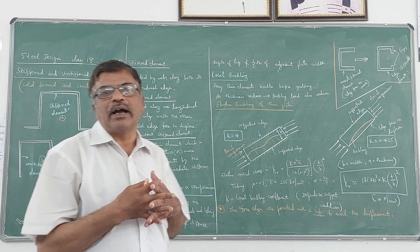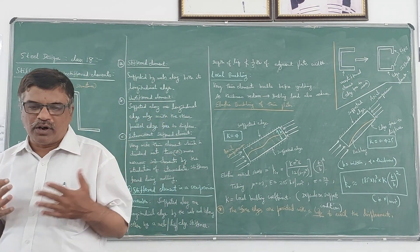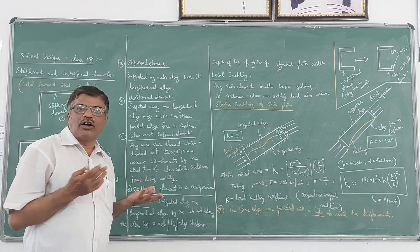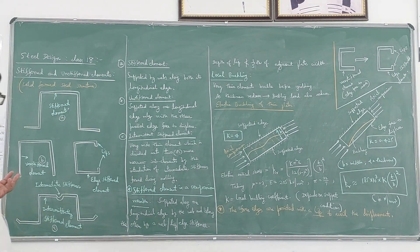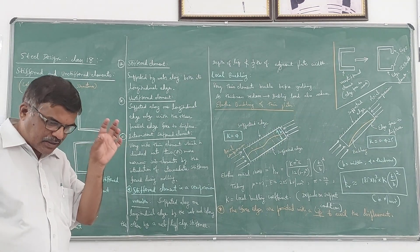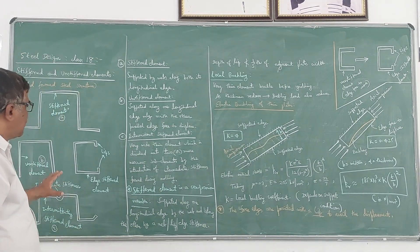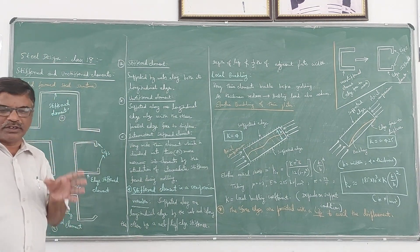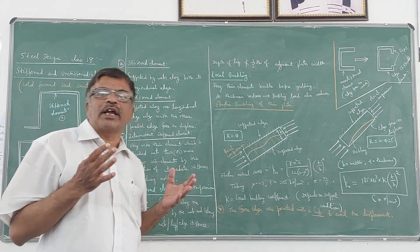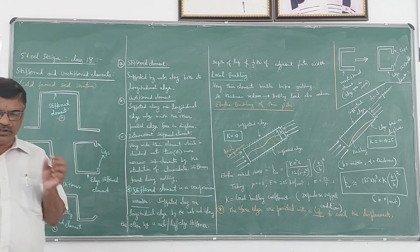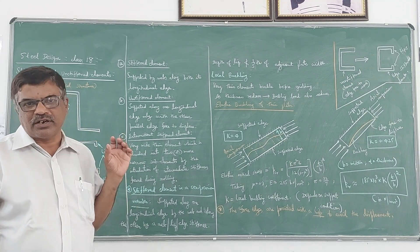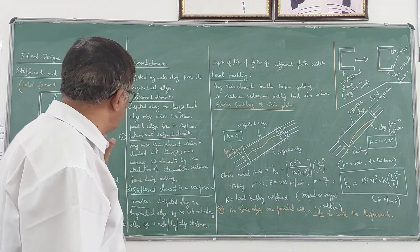When you are designing any cold-formed steel structure — any compression element or bending element, that is a column or a beam — you should know what type of element the section consists of. Because the value of the buckling coefficient matters, whether it is a beam element or a column element, buckling effect will be there.